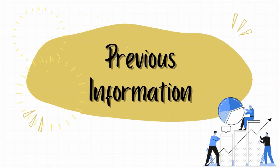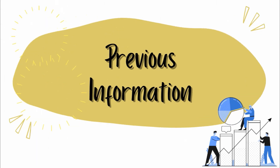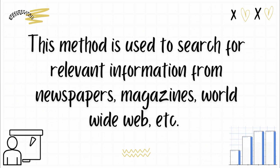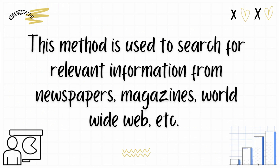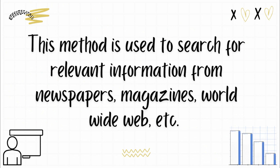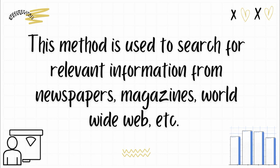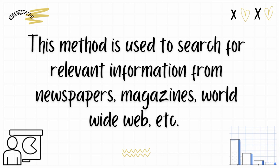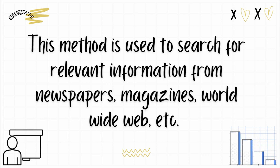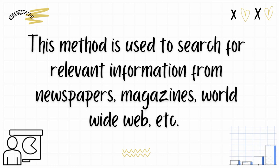Next, we have the previous information method, meaning you collect data by searching for relevant data or information from newspapers, magazines, the worldwide web, and so on — data that already exists. You simply retrieve it and use it in your study. You may search articles, books, Reader's Digest, or the internet.